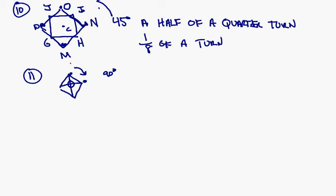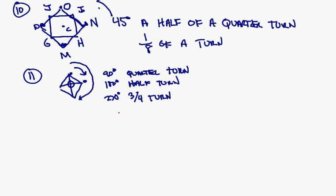It could rotate all the way over to here, which is a 180. This is a half turn. It could rotate another 90, which would be 270, which would be a three-quarter turn. Or it could go all the way to 360, which would be a full turn.